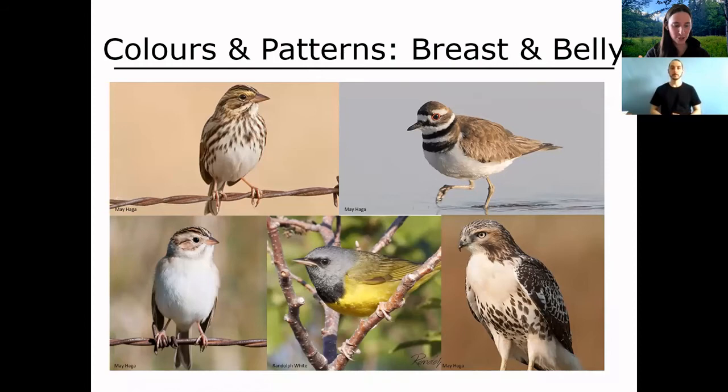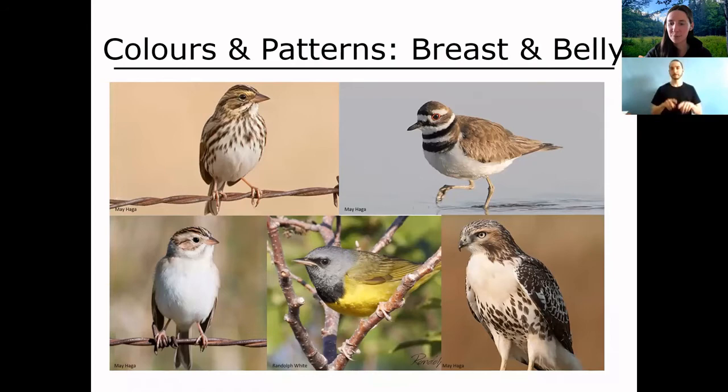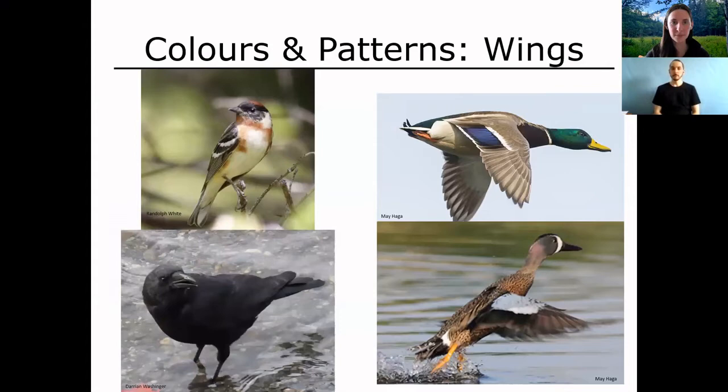Also take a look at the colors and patterns on the breast and belly — this is especially helpful when looking at different sparrows. Check whether the breast and belly is plain, streaked, has a spot on it, has breast bands, or a bib. Keep your eyes on this area of the bird — there are a lot of good clues to be found there.